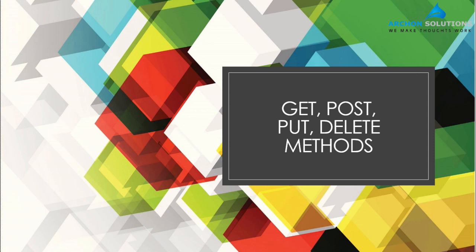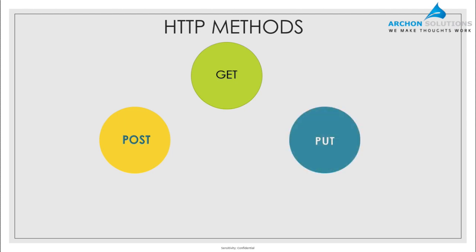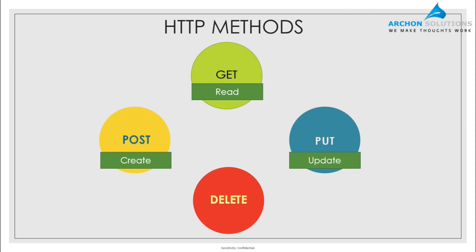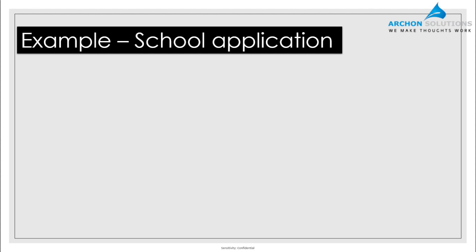The first operation available is called the GET method, the second is called the POST method, the third is called the PUT method, and the last is called the DELETE method. These four methods help us solve the basic CRUD operation, which is Create, Read, Update, and Delete — that's nothing but CRUD.